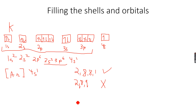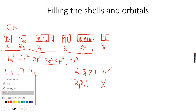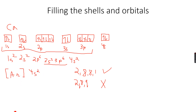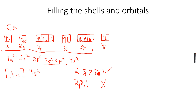That's why we get 2,8,8,1 and not 2,8,9. Now let's take calcium. Calcium has 20 electrons in total, which means one more electron than potassium. So the 4s subshell will also fill, giving 4s². The conventional electronic configuration of calcium will be 2,8,8,2 rather than 2,8,10, because those last two electrons are in the fourth shell, not the third shell.